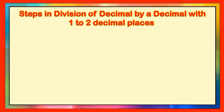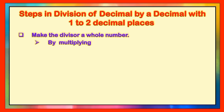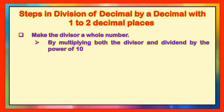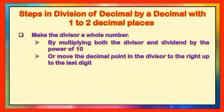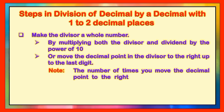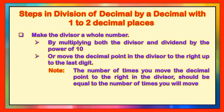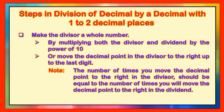Children, let us familiarize ourselves with the steps in division of a decimal by a decimal with 1 to 2 decimal places. The first step is to make the divisor a whole number. There are two ways: by multiplying both the divisor and the dividend by the power of 10, or you can move the decimal point in the divisor to the right up to the last digit. Take note — the number of times you move the decimal point in the divisor should equal the number of times you move the decimal point to the right in the dividend. The next step is to divide as a whole number.